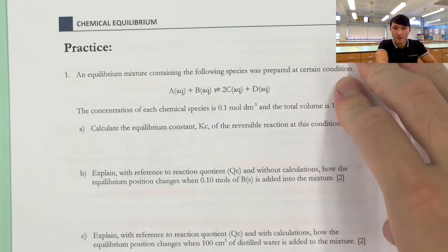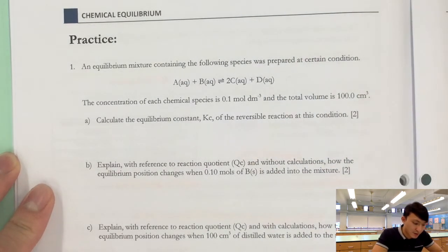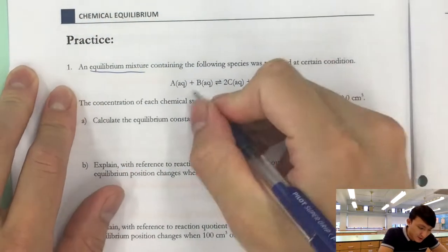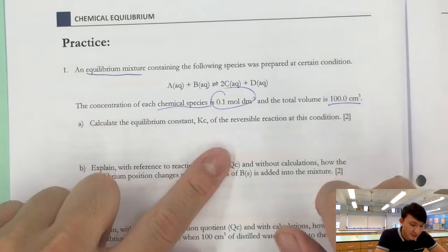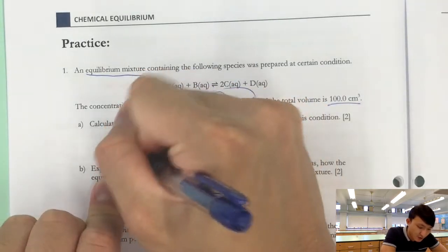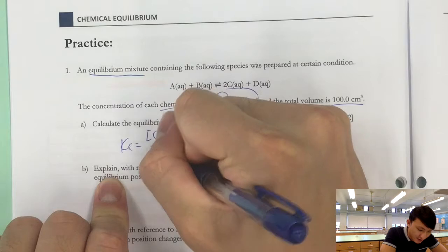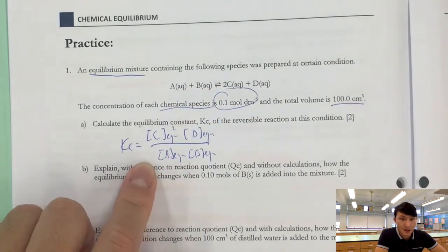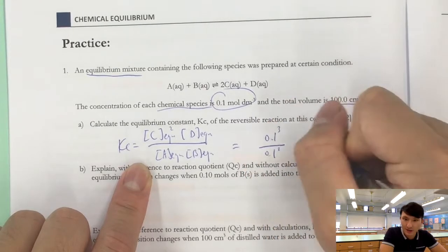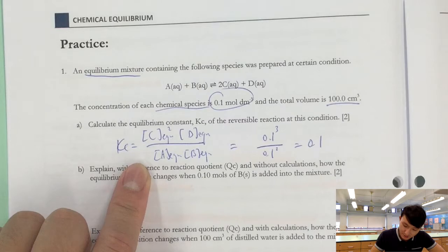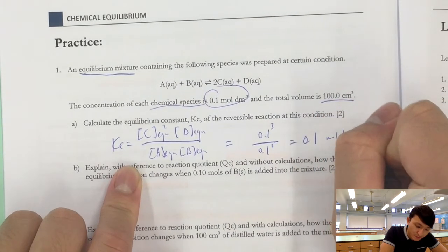We have two practice questions. For question one, we have an equilibrium mixture where the concentration of each chemical species is 0.1 mol/dm³, and the total volume is 100 cm³. To calculate Kc: Kc = [C]²_eqm × [D]_eqm / ([A]_eqm × [B]_eqm) = 0.1³ / 0.1² = 0.1 mol/dm³.